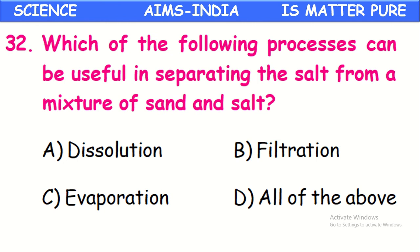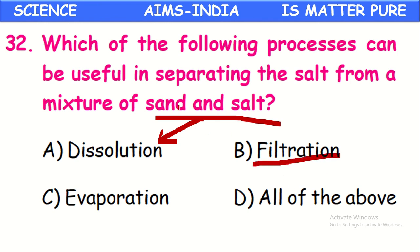Which process can be useful in separating salt from a mixture of sand and salt? To separate salt, three processes are needed. First, the sand-and-salt mixture is dissolved in water — salt dissolves while sand remains undissolved. Then filtration is done: sand is separated. Finally, from the salt solution, salt is separated by evaporation. So dissolution, filtration, and evaporation — all three are needed.